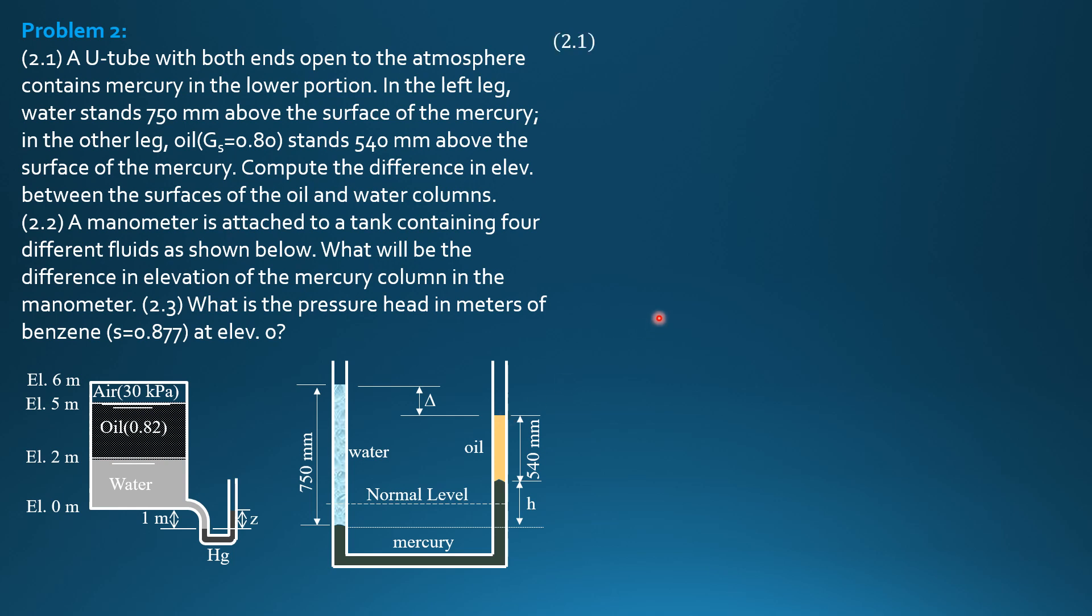So let's do that. So beginning here, the pressure is zero. Going down is plus gamma H, so gamma of water times 0.75. Then we reach this point. We jump across because the pressure, the two points have the same elevation and we have only a single homogeneous fluid, which is mercury.